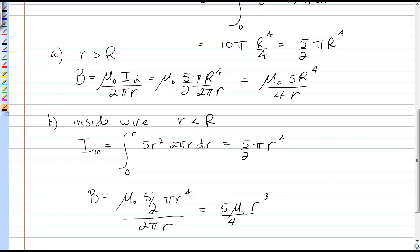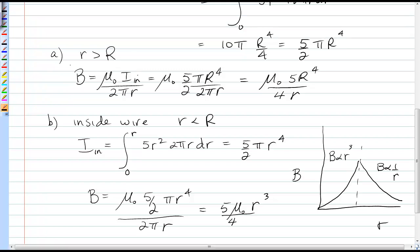So if I were to graph B as a function of r, it's a cubic function inside, so this increases as r³, and it's a 1 over r function outside, acting like a thin wire. And that's the magnetic field when you have non-uniform charge density.